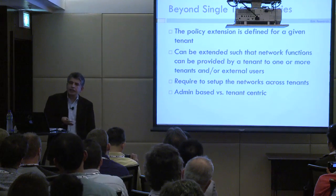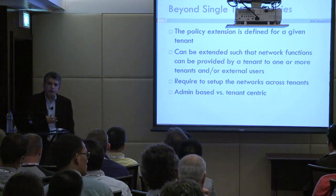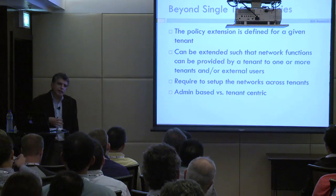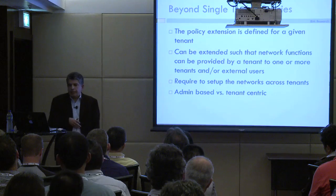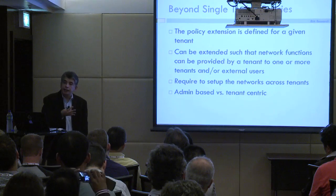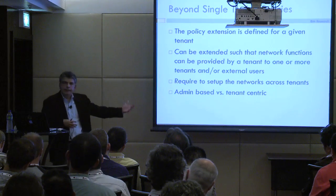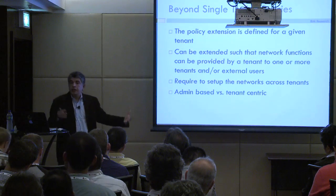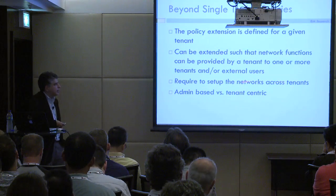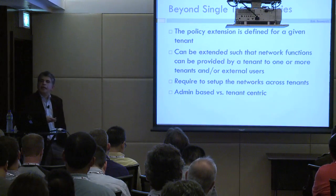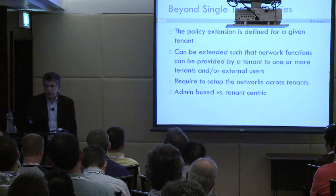Most discussions have been limited to policies belonging to a single tenant. If we establish this framework, we can start talking about policies that govern connectivity between different tenants. That's where you can provide services consumed by other tenants or users outside your OpenStack infrastructure — coming from an external network or the internet, or from another tenant. As you do that, you have to establish connectivity across tenants, whether in a tenant-centric way or requiring an admin-based approach. You could extend this policy abstraction to multiple tenants.